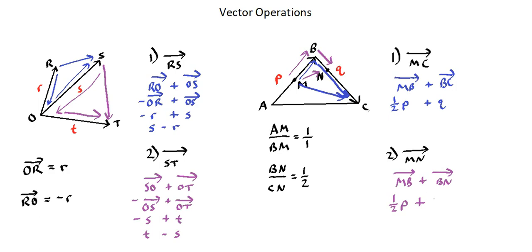Looking at the ratio BN to CN is one to two. If we consider BC a vector divided into three equal parts, one part is BN and two parts are CN. In other words, one third of Q is represented by the vector BN. In terms of small letter P and small letter Q, vector MN is represented as one half P plus one third Q. And now we've seen a number of examples of how to describe vector operations in terms of two coplanar vectors.